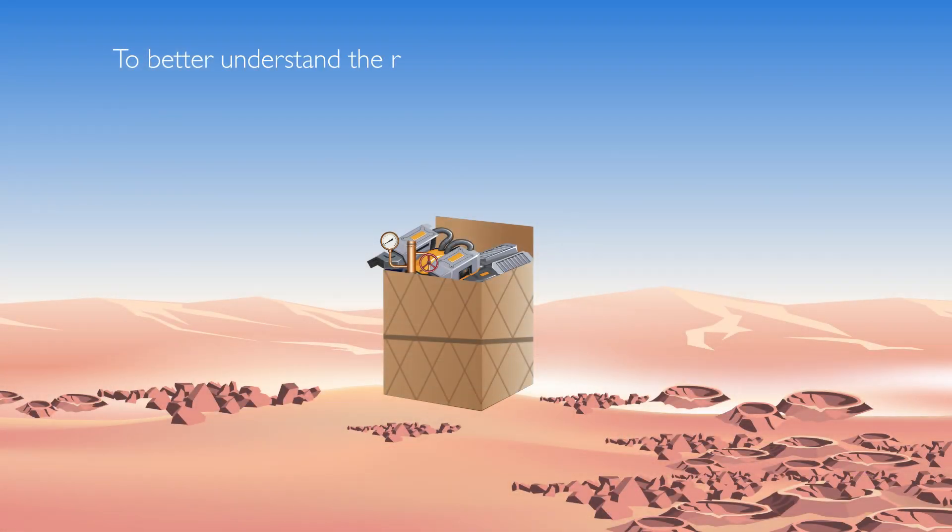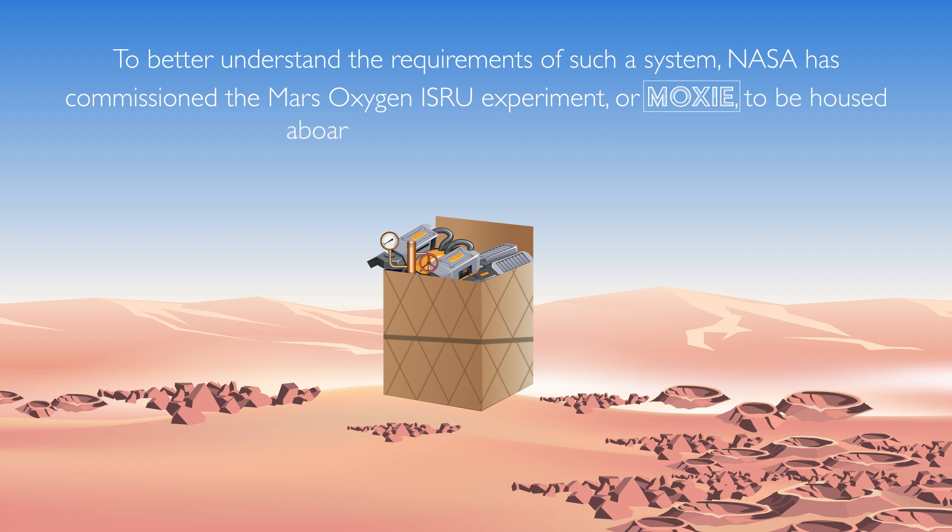To better understand the requirements of such a system, NASA has commissioned the Mars Oxygen ISRU experiment, or MOXIE, to be housed aboard NASA's Perseverance rover. In April 2021, MOXIE began to extract small amounts of carbon dioxide from the Martian atmosphere and convert them into oxygen.